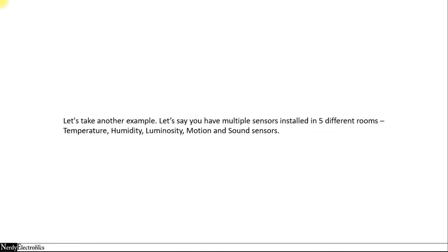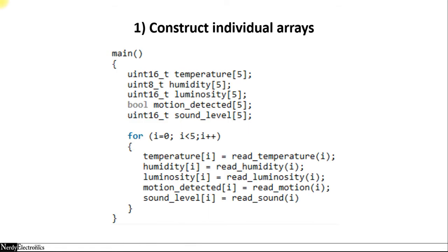Let's take another example. Say we have multiple sensors installed in five different rooms: temperature sensors, humidity, luminosity, motion, and sound sensors. If we are to construct individual arrays for these sensors, it will look something like this — we have a temperature array of size 5, where the 5 signifies the number of rooms, and similarly arrays for humidity, luminosity, motion, and sound.